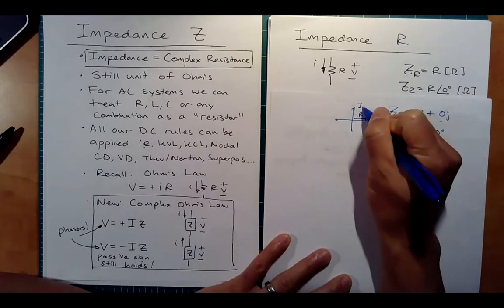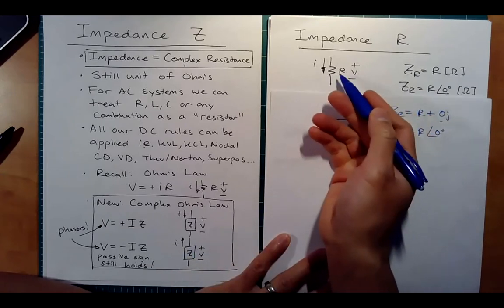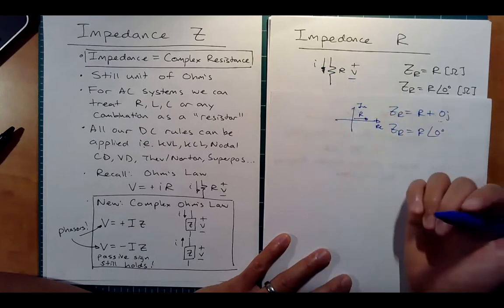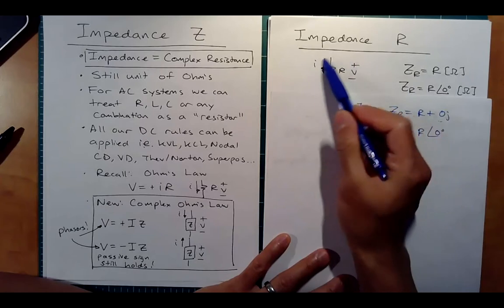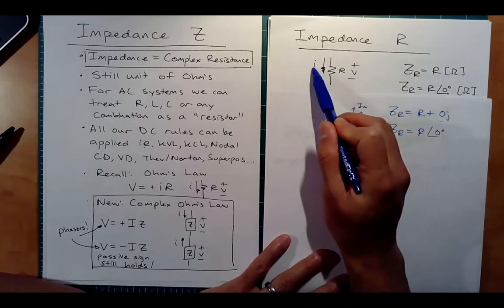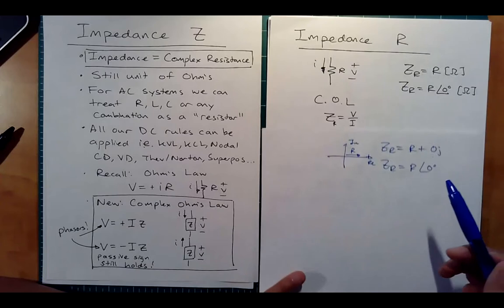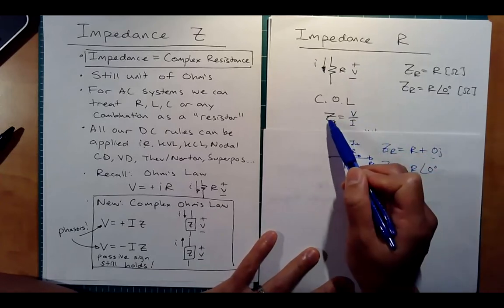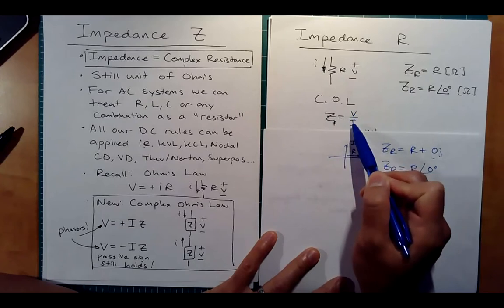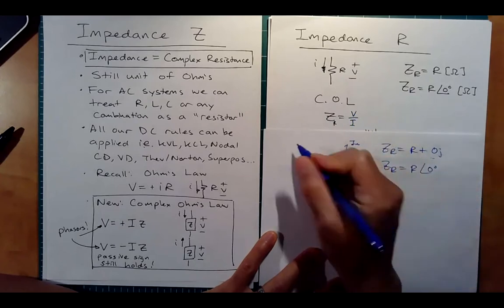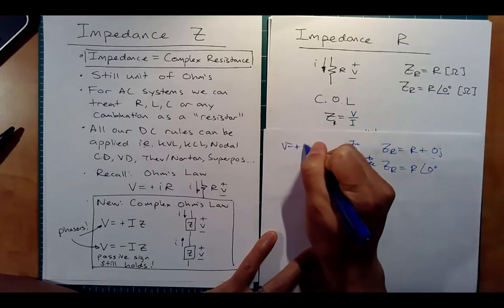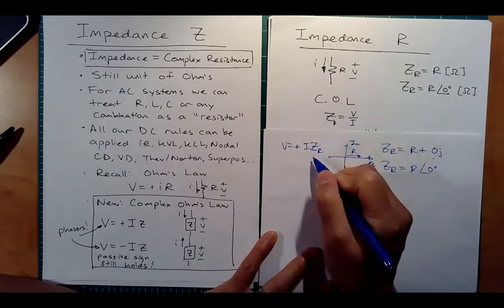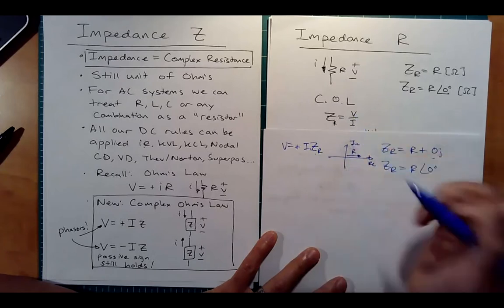We can now apply our complex Ohm's law: V equals plus IR because the current is going into the positive terminal. So V equals plus IZ, or ZR equals V over I — the same thing. Don't forget the voltage is a phasor and the current is also a phasor. The voltage has some magnitude with an angle, and the current has its own magnitude and angle.